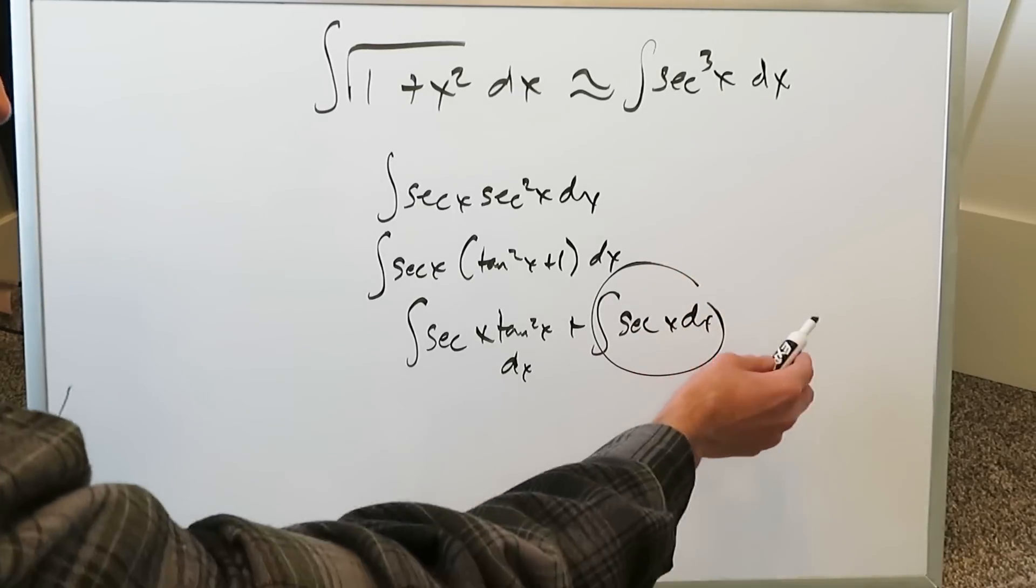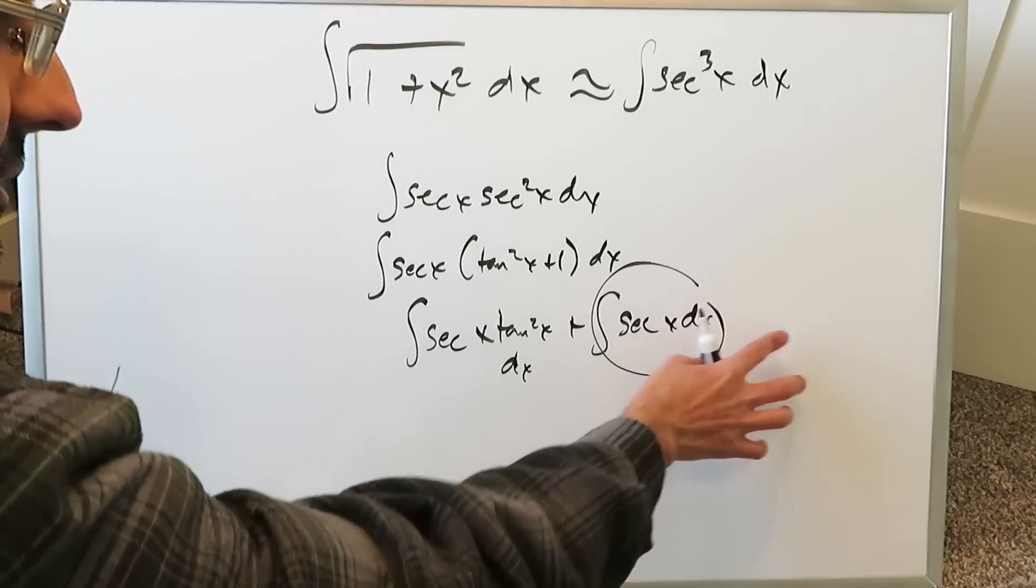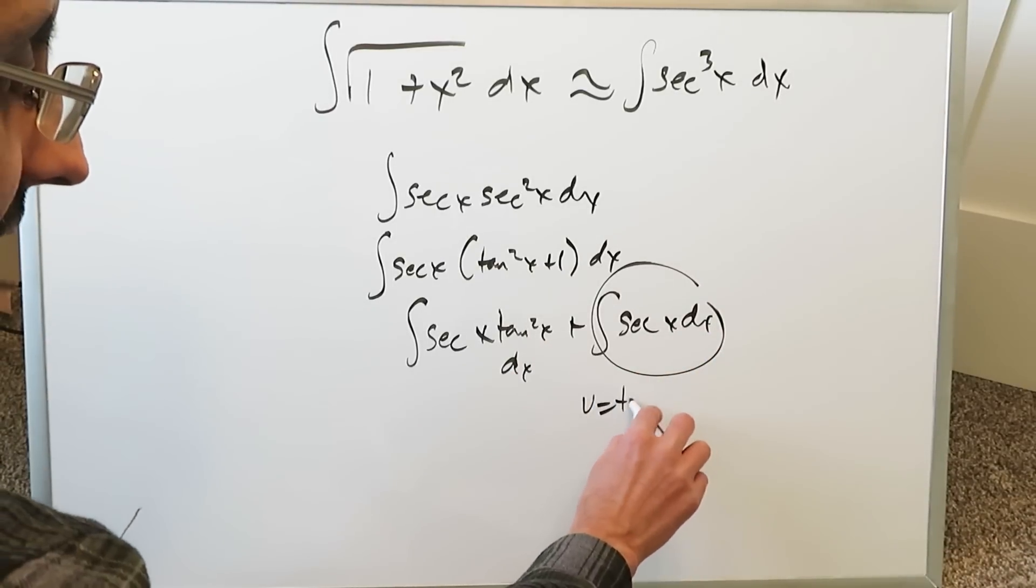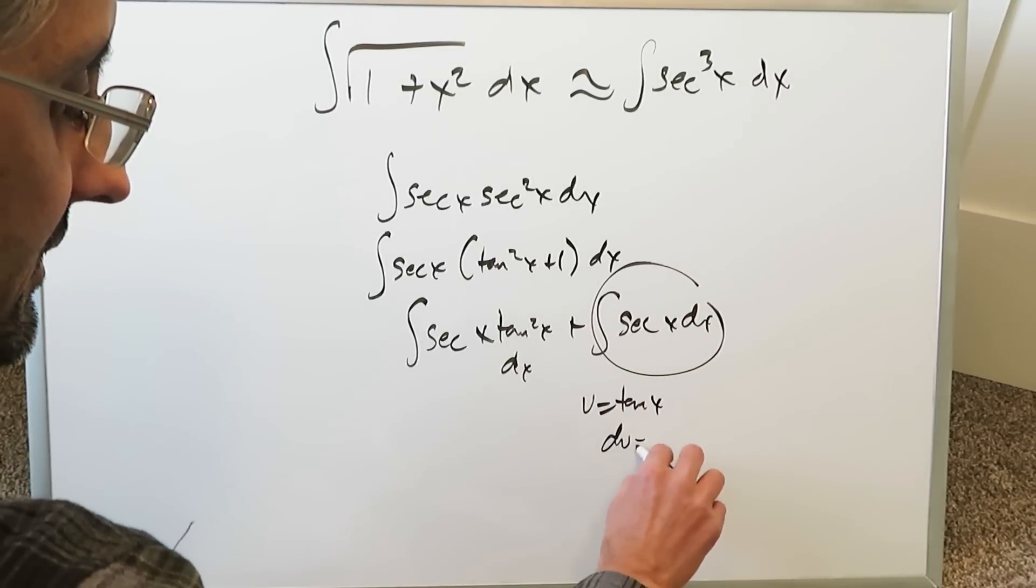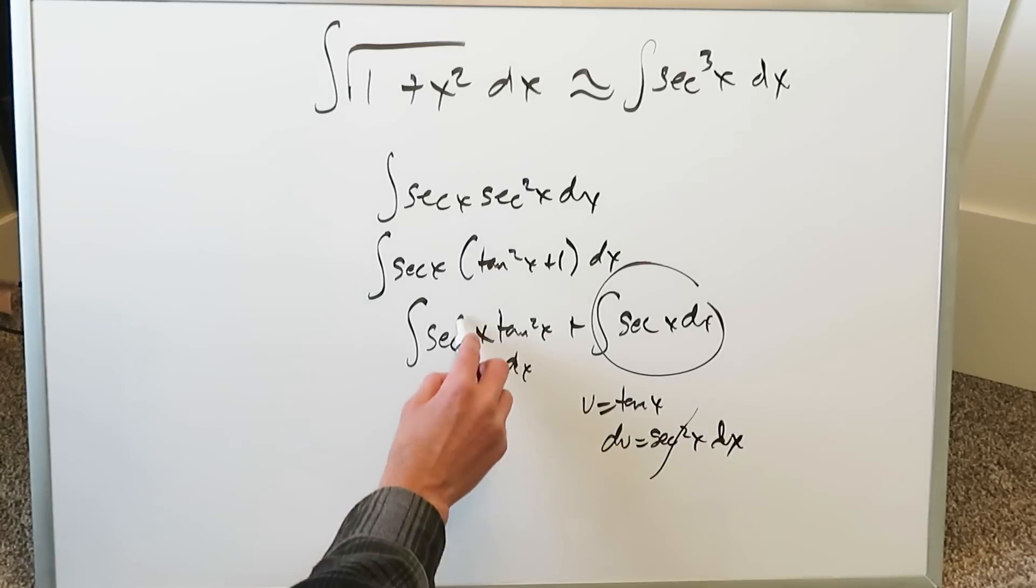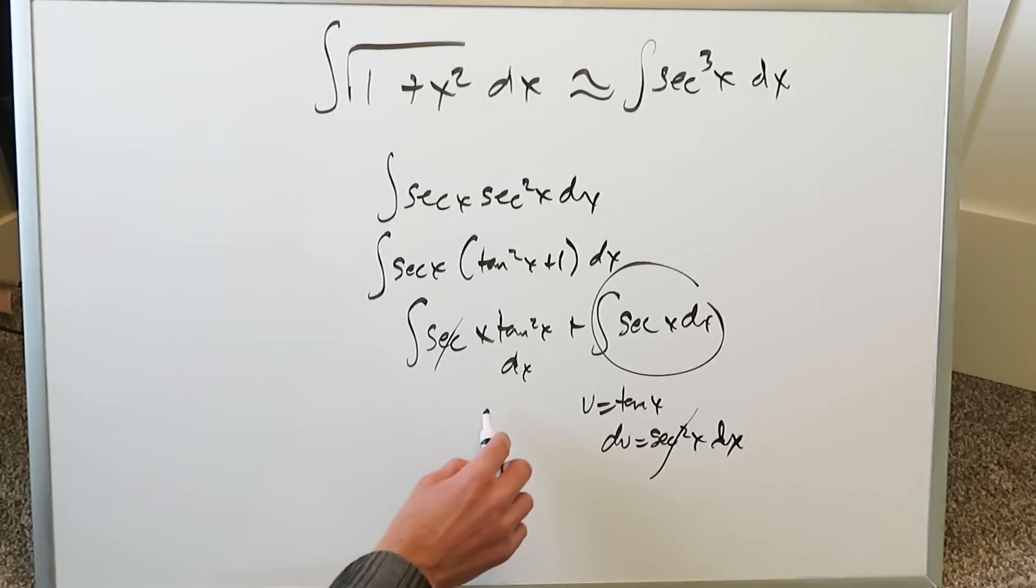This right here is very easy because it's an antiderivative easily waiting for you to get to. This right here is not easy because you have u equals tan x and du equals secant square x dx. This secant square x will not fully cancel out with this and you'll still have a u along with a secant x and then you're kind of stuck.